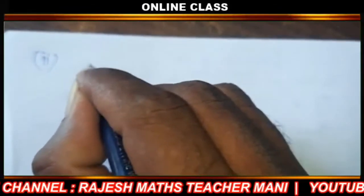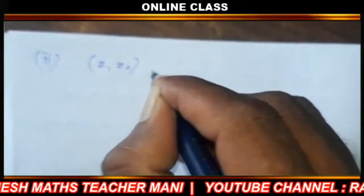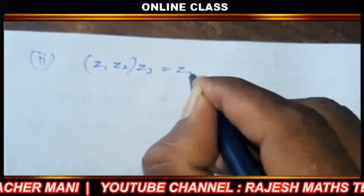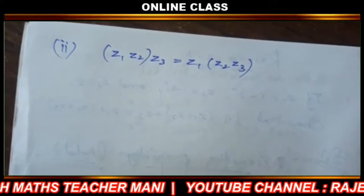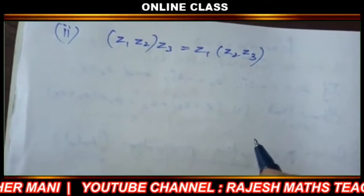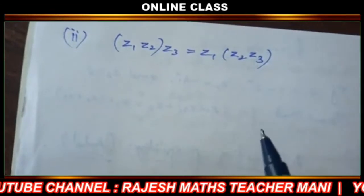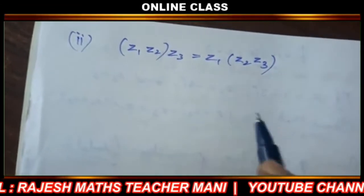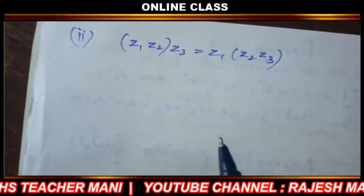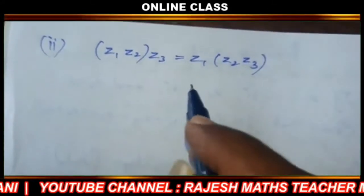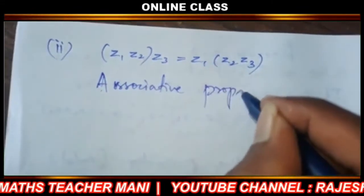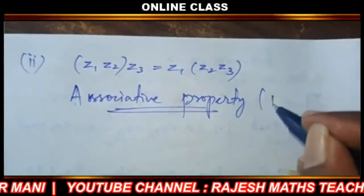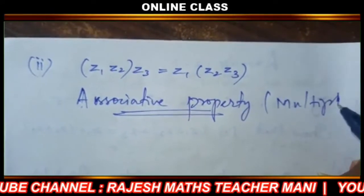Next, question number 1, second part: z1 into z2 into z3 equals z1 into z2 into z3. We have properties under multiplication for three complex numbers z1, z2, and z3. Multiplication is the associative property.